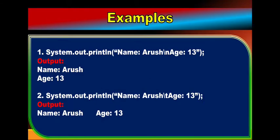Look at some examples. Here, System.out.println with 'Name: Arus\nAge: 13' — after printing 'Name: Arus', there is \n, so the compiler gets the instruction that the next part will be printed on a new line. So 'Age: 13' appears on the new line. In example two, 'Name: Arus\tAge: 13' — backslash t means one horizontal tab space, so after printing 'Name: Arus', one tab space is added before 'Age: 13'.